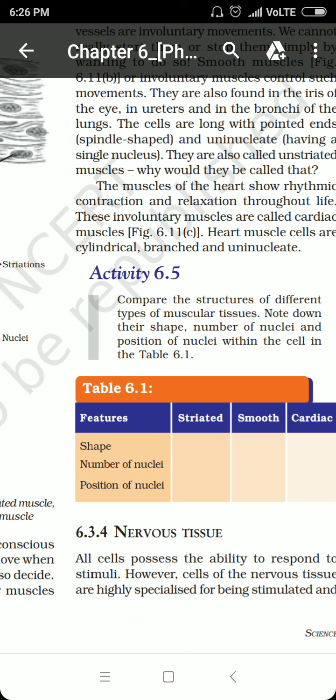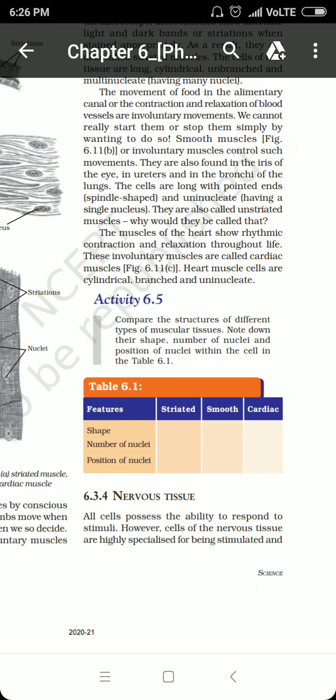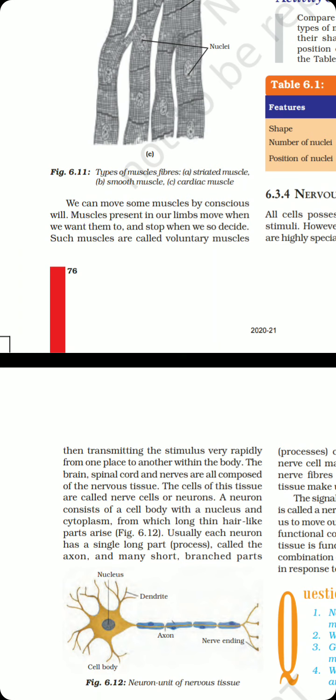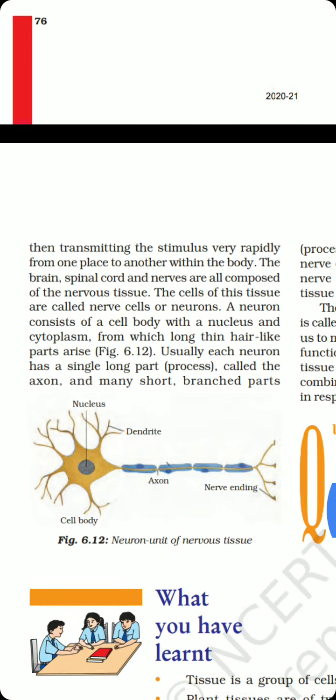Now let us talk about the last tissue we have to deal with in this chapter — the nervous tissue. This is the tissue responsible for carrying signals from one part of the body to the other. The nervous tissue is responsible for transmitting stimuli very rapidly from the place of reception to the place of coordination or control. The brain is the highest coordinating center within the body, where sensory signals are interpreted and a response is created, transmitted to the organ of action by motor neurons. Sensory neurons and motor neurons together complete the pathway, and these neurons consist of nervous tissues.